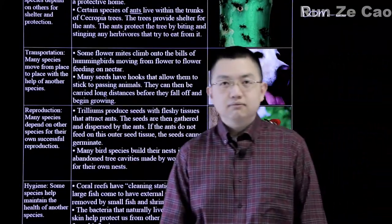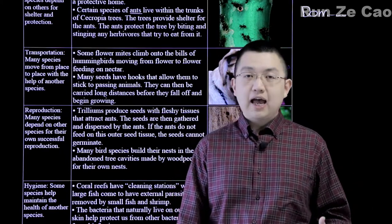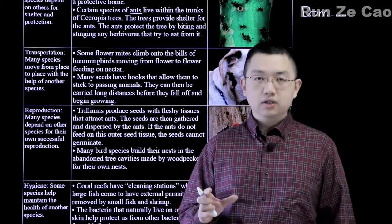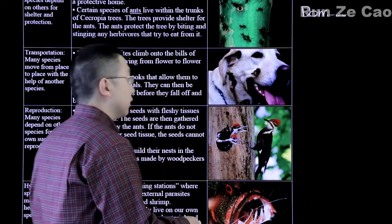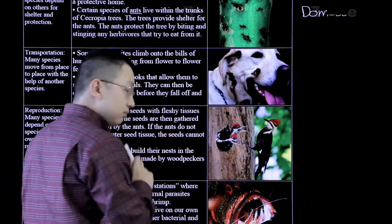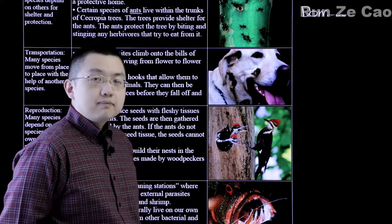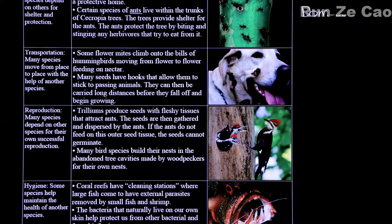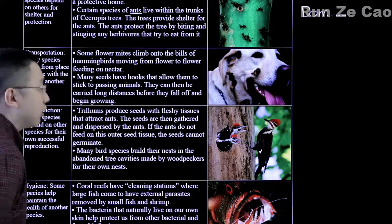Transportation can be of the organism itself, such as various limpets or other crustaceans growing on whales. Or it can be transportation of young organisms — larval dispersion, pretty much. Humans also do this for our domesticated life forms. Other examples are flower mites climbing onto the bills of hummingbirds to get from one flower to another.